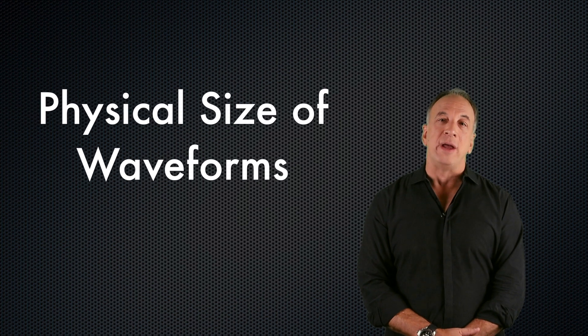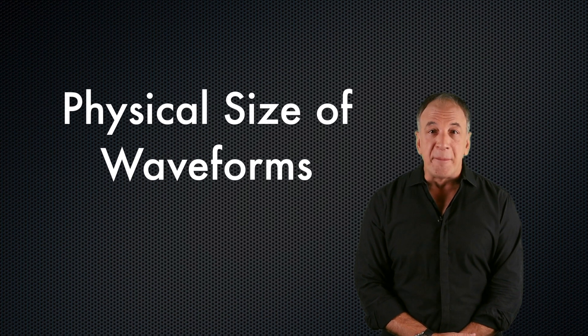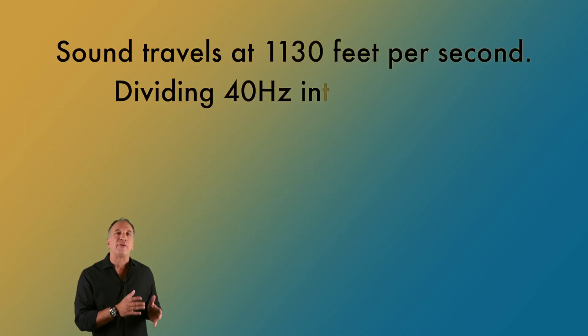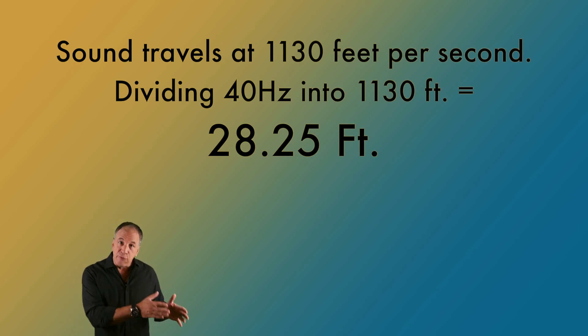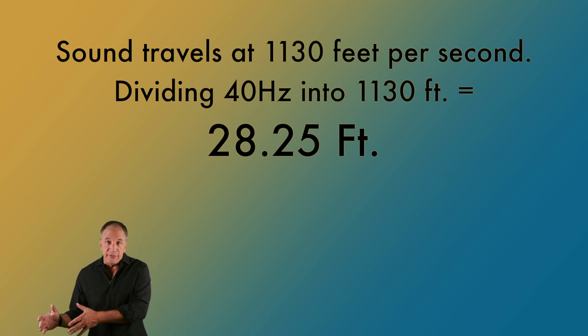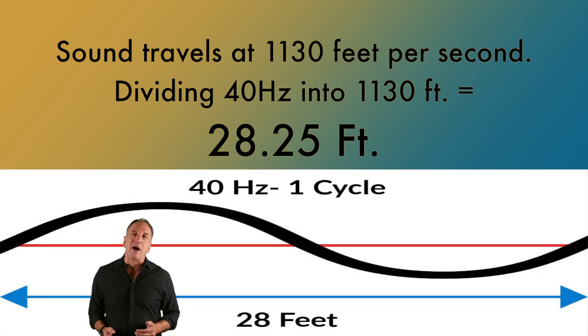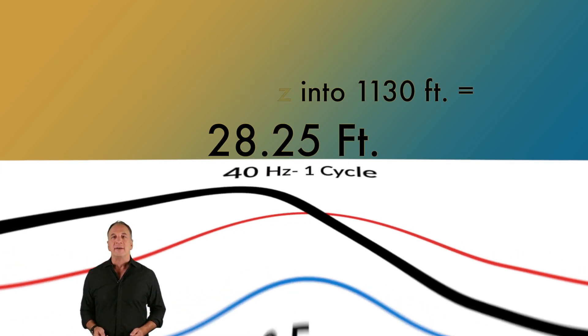Let's talk about physical waveforms. A very low sub-bass or 808 kick hits down at around 40 hertz. Sound travels at an average rate of 1130 feet per second. So by dividing 40 cycles per second into 1130 feet, we get 28.25 feet, which is the actual length of the 40 hertz waveform. Sometimes when you're mixing right in front of speakers, you may not be accurately hearing what the bass is doing. But if you take a few steps back, you allow more room for the waves to develop, so the bass now sounds fuller.